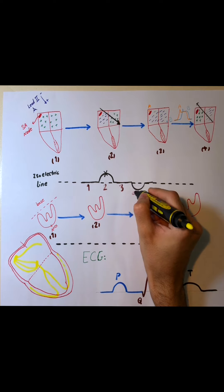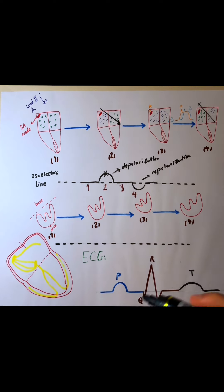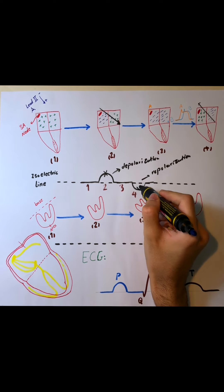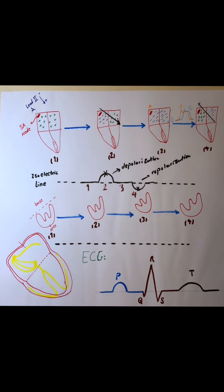This is our stage four. Again, the peak of this fourth stage is when we have half positive, half negative charges on the surface of our atrium.